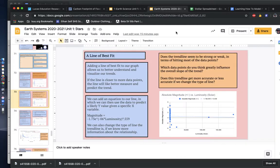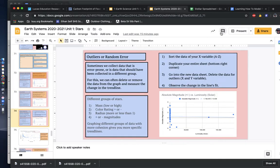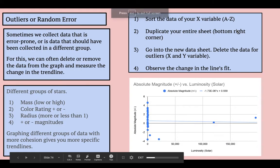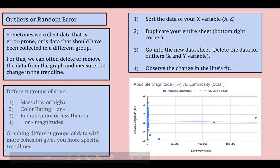Now the third thing we can talk about, or the second real thing, the third slide is outliers. So sometimes we collect data that's error prone, or maybe it's data that we shouldn't have collected because it belongs in a different group. And for this, we can sort, delete, or remove the data from the graph to try and make our trend line more accurate or better.